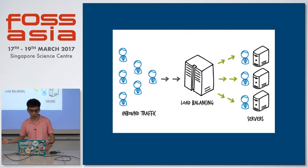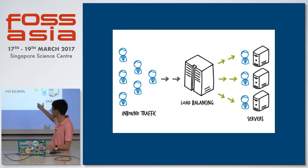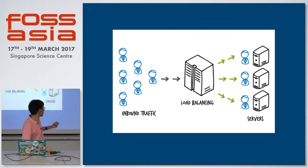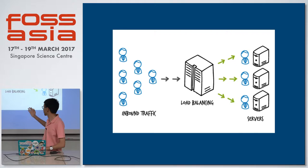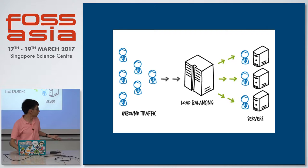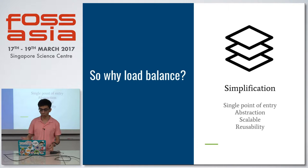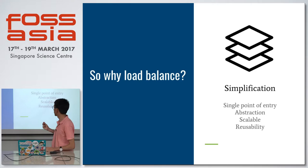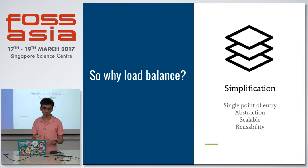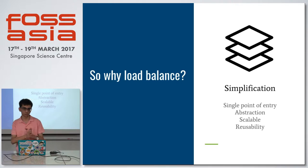A load balancer acts as a middle person between the client and the servers, and depending on some algorithm and some parameters about the servers and the clients, it routes the request to one of the servers. So why do we need load balancing? The first reason is simplification — it is a single point of entry for the client, because it acts as a middle person between the client and the server.